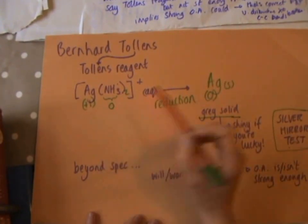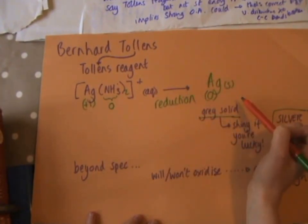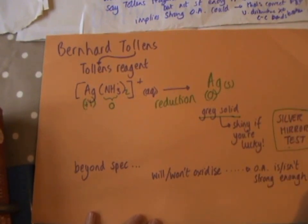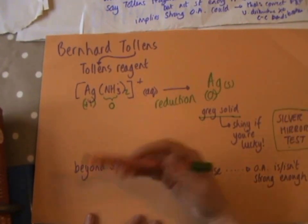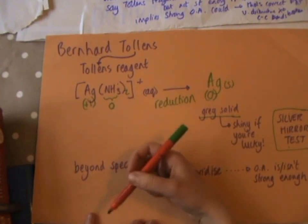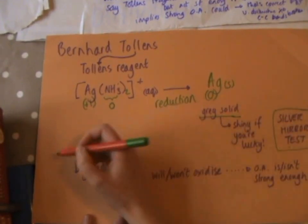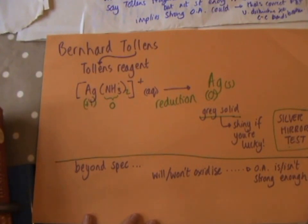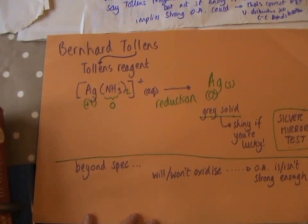The lucky few for whom it works will produce a nice silver mirror coating the inside of the test tube. The rest will just get a gray solid, but that's still a positive result showing that silver metal has been produced. The aldehyde produces silver; the ketone won't — so again that distinguishes between an aldehyde and a ketone, which is what we need to know for the specification.